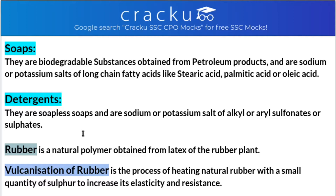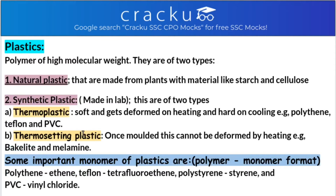Vulcanization of rubber is a process of heating natural rubber with a small quantity of sulfur. The small quantity of sulfur is used to increase its elasticity and resistance. That process is called vulcanization of rubber.